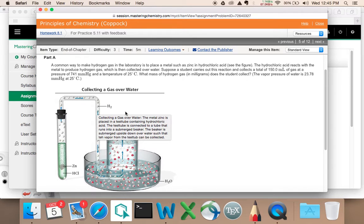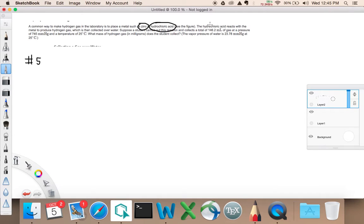Suppose a student carries out this reaction and collects a total of 150 mils of gas. Actually, this student who sent me this one, it had 146.2 mils of gas. So I'm going to say PVNRT. The volume is 146.2 mils, which is equal to 0.1462 liters of gas at a pressure of 745 millimeters of mercury. 745 millimeters of mercury, which is equal to, let me go to a separate part of my paper and say 745 millimeters of mercury.